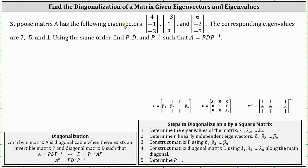Suppose matrix A has the following eigenvectors: the eigenvector four, negative one, negative three; the eigenvector negative three, one, three; and the eigenvector six, negative two, negative five.